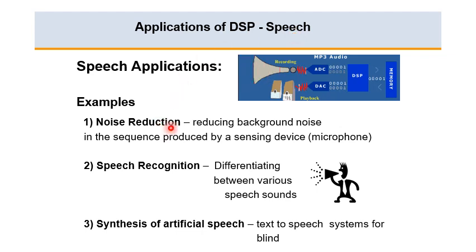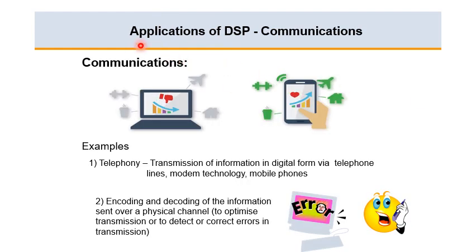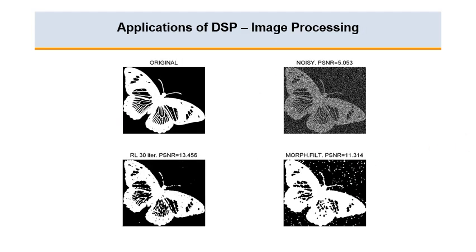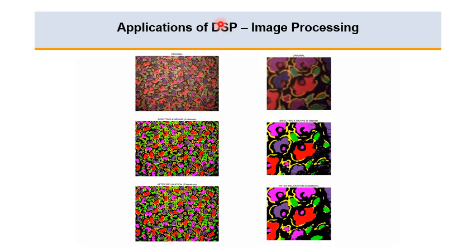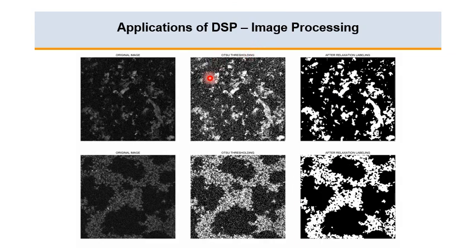DSP applications in speech processing include noise reduction, removing background noise, speech recognition (differentiating between various speech sounds), and synthesis of artificial speech. In communications, DSP is used for telephony, transmission of information in digital form via telephone lines, mobile phones, and encoding or decoding information sent over a physical channel to optimize transmission and detect or correct errors. DSP is also used in digital image processing.